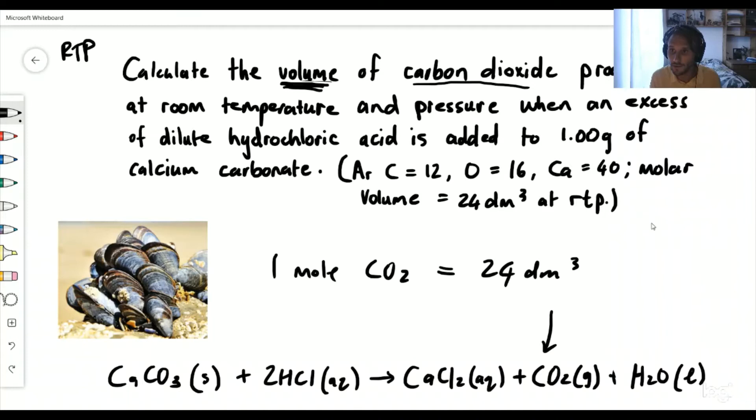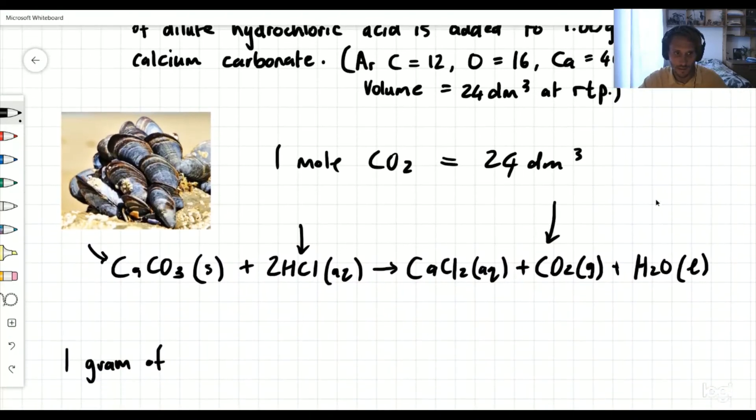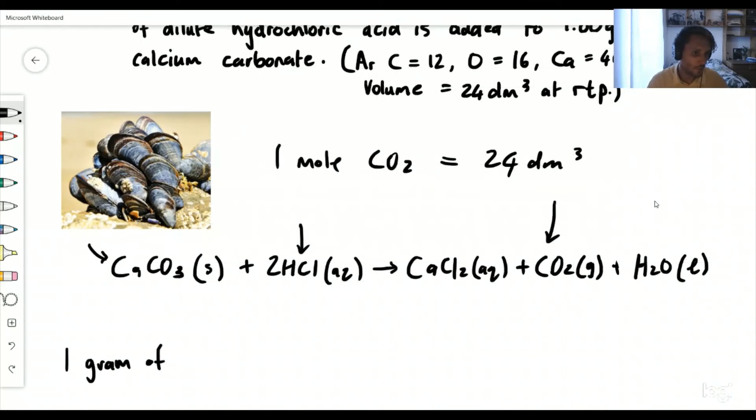What are we working with? When an excess of hydrochloric acid, dilute hydrochloric acid, that's over here, I'm going to explain excess in a second, is added to one gram of calcium carbonate, CaCO3. So we've only got one gram of this. Now remember, we never work with grams with the equations. We have to always convert to moles. So let's do that first.